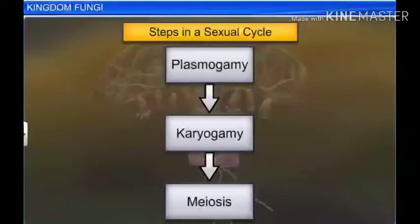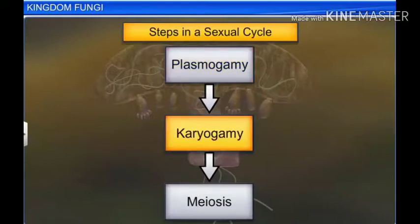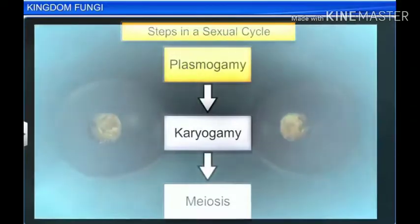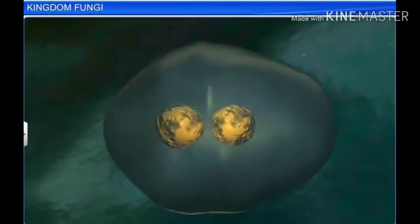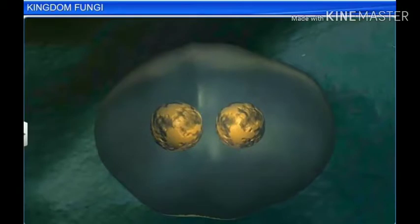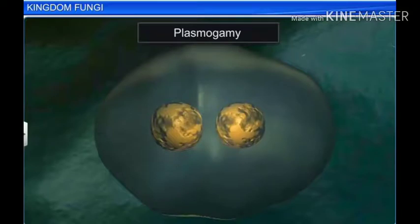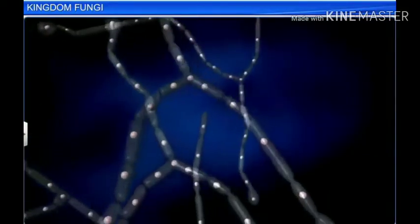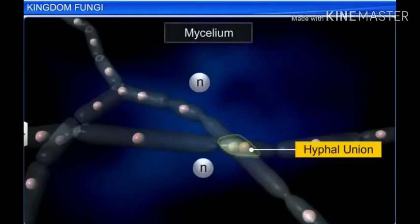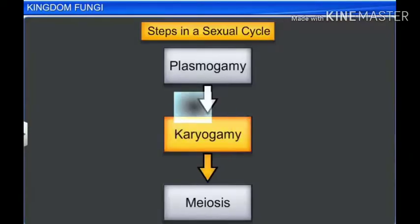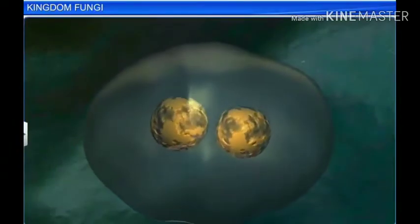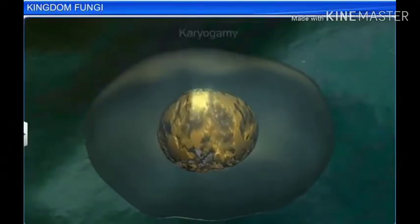There are three steps in the sexual cycle: plasmogamy, karyogamy, and meiosis. The first stage involves the fusion of protoplasms between two motile or non-motile gametes. This is called plasmogamy. Plasmogamy occurs when two haploid hyphae of compatible mating types fuse. After plasmogamy, the two nuclei fuse together in the second stage, known as karyogamy.